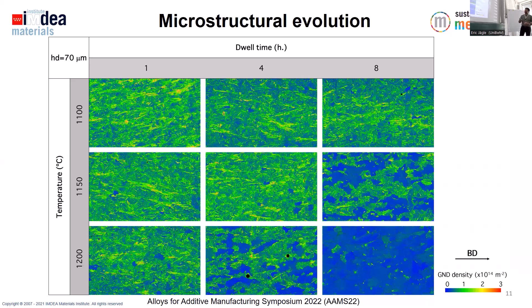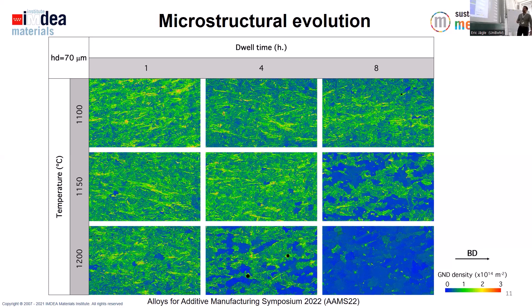If we look now at the 70 micron samples, we see that already at 1150°C after eight hours we have a significant fraction of recrystallized grains. Even at 1100°C we see some small recrystallized areas, and at 1200°C it is very clear that this material has achieved almost full recrystallization.